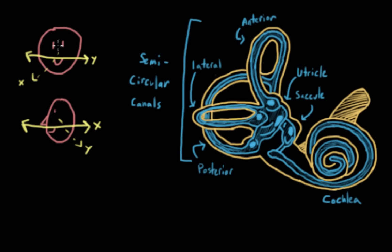In addition to the x and y-axis, we also have the z-axis, and that one goes straight up and down. You can see it on both images here. Each of our semicircular canals actually lines up with one of these axes.